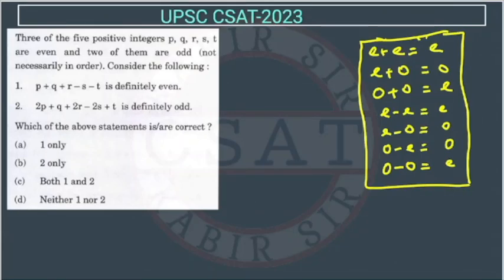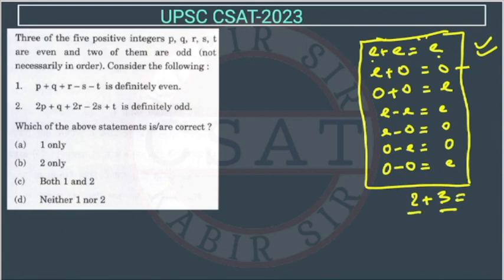To solve this question from number systems, we should know: even plus even gives even, and even plus odd gives odd. You must know these things. If you don't, try with an example like 2 plus 3 — this is even, this is odd, and we get 5, which is odd.